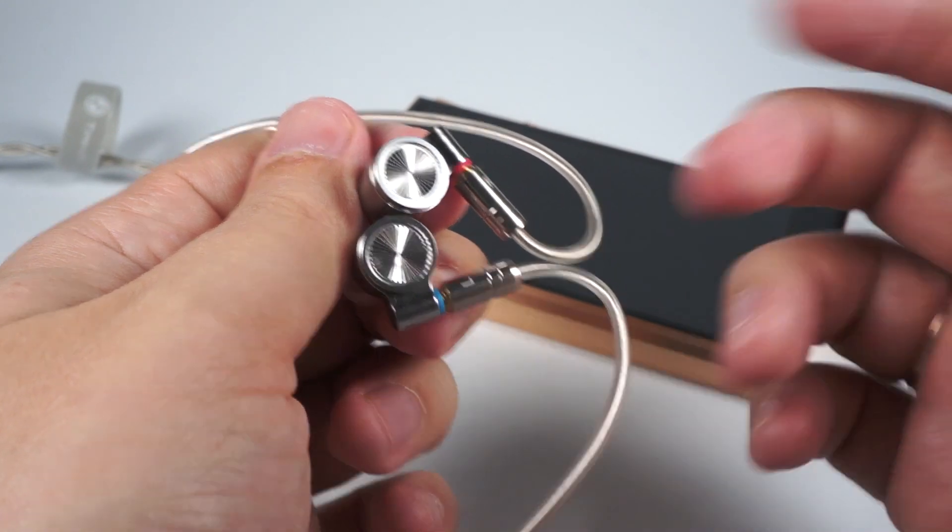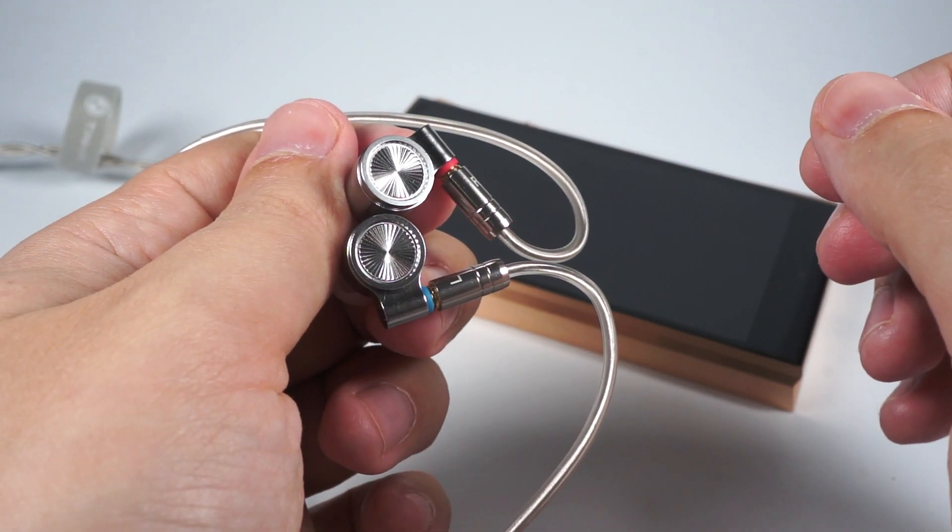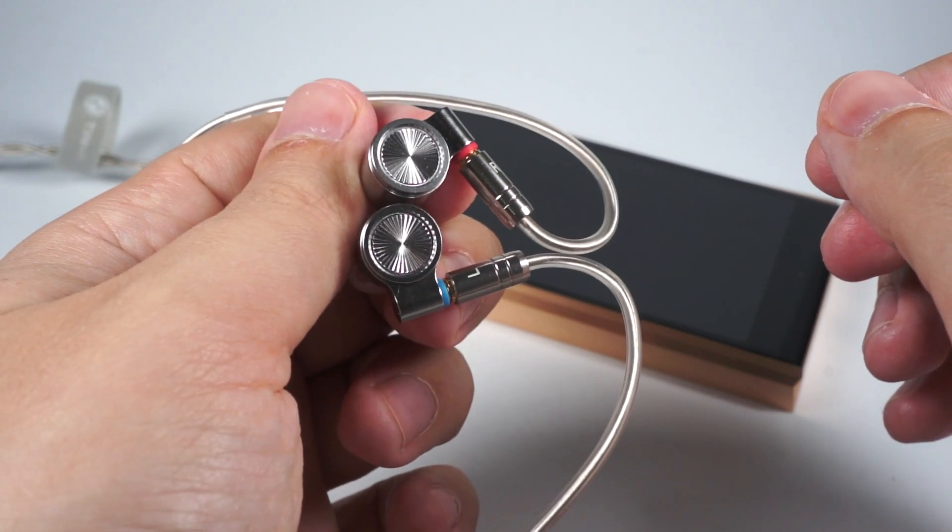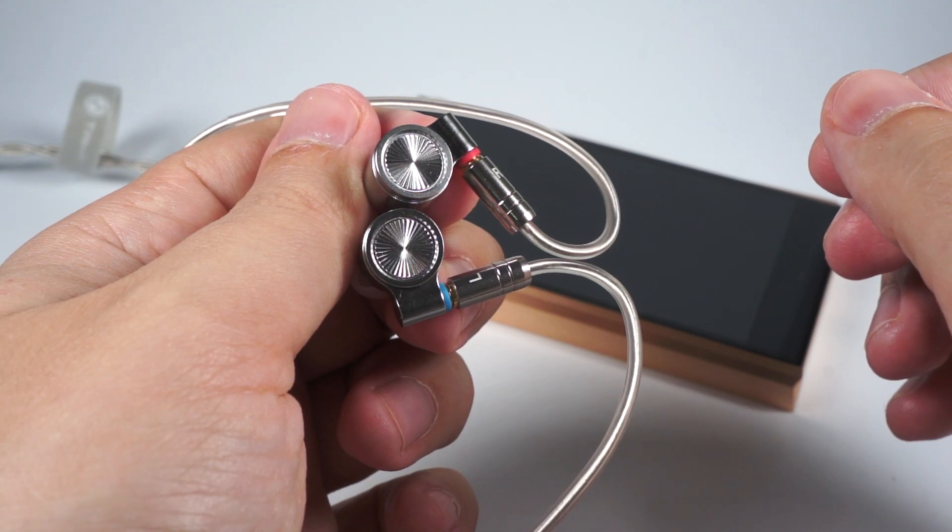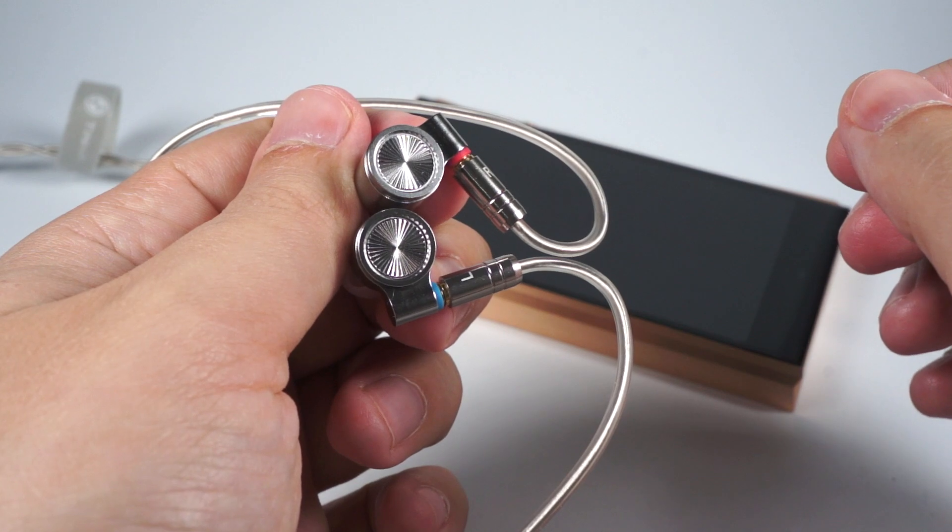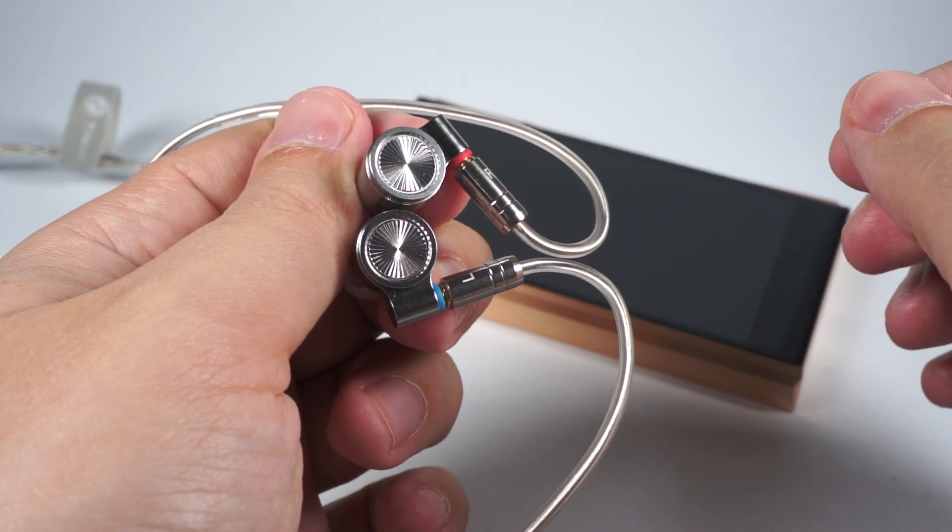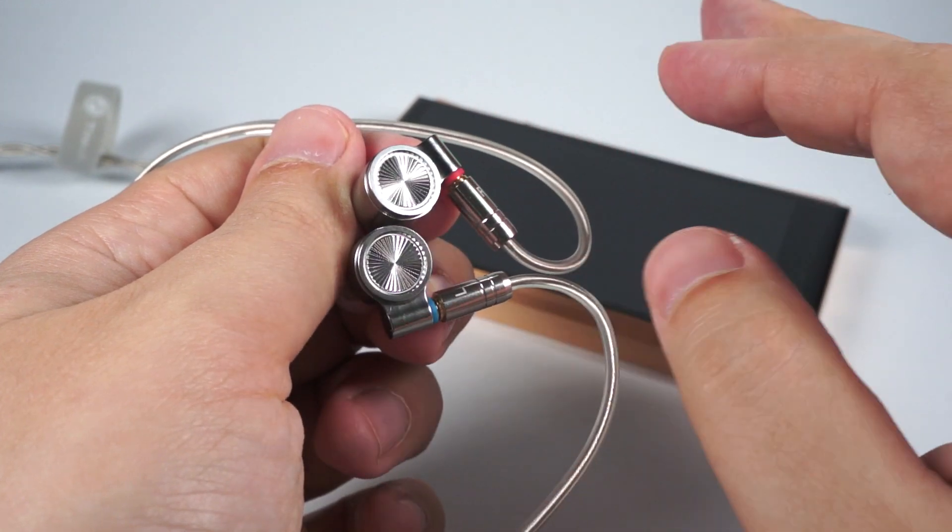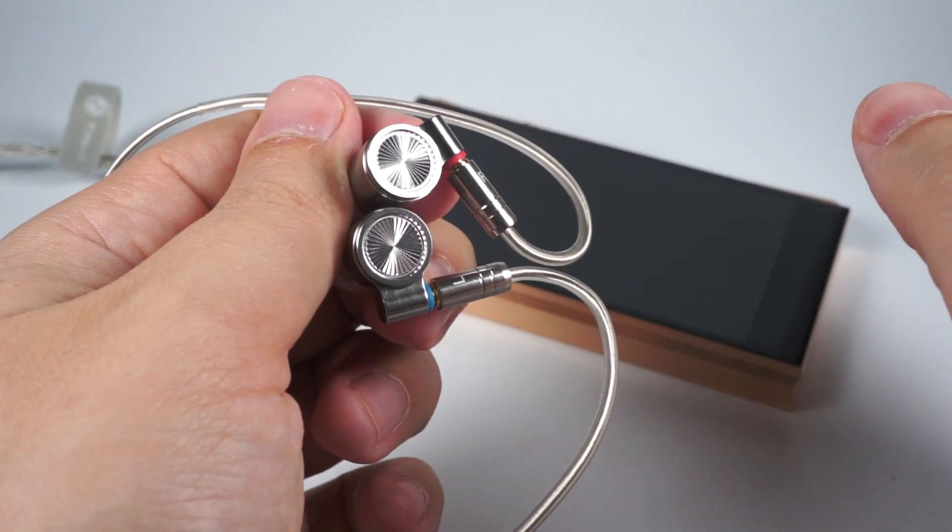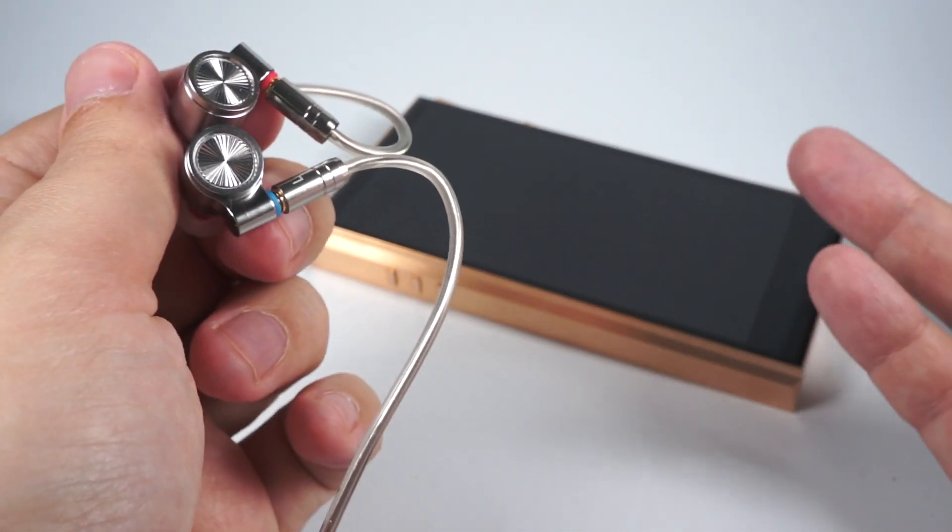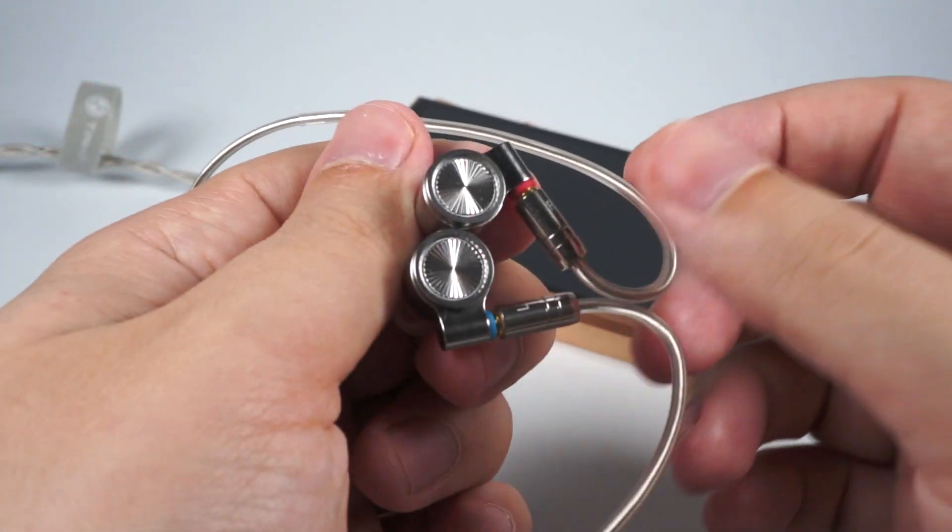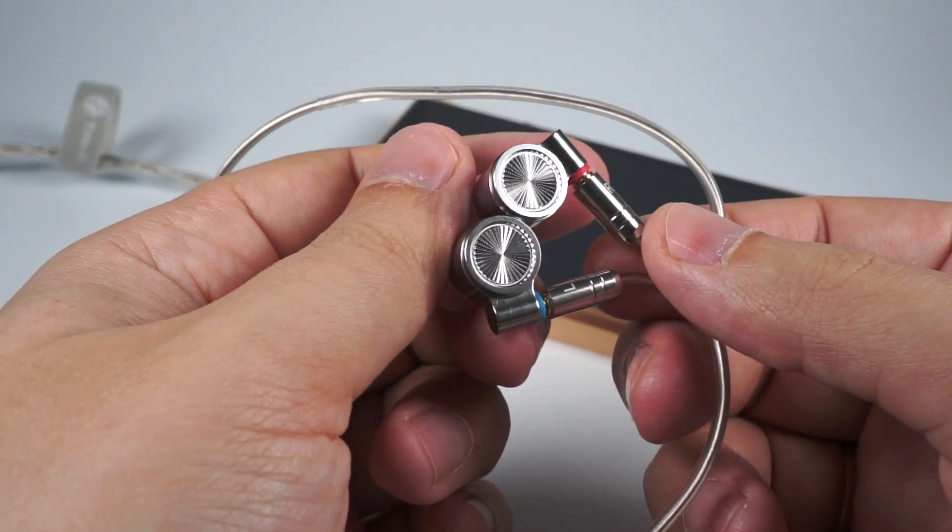Another model to mention is Moondrop KXXS. They are also pretty natural and with upper mid accent, but KXXS is a bit more even on the treble. They have more linear treble and upper mid so they sound a bit more realistic in this area, but their price is also noticeably higher. In that price range you can also get P1, so it's another type of competition.